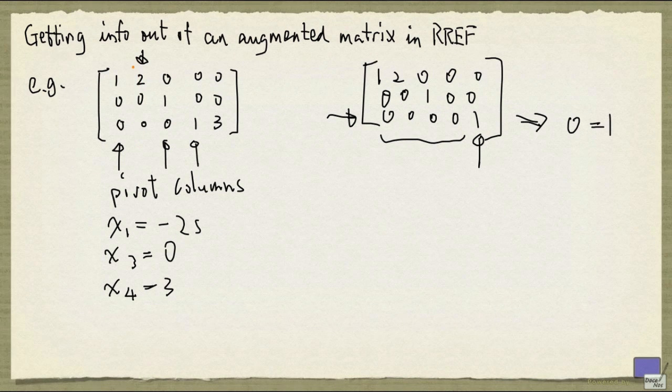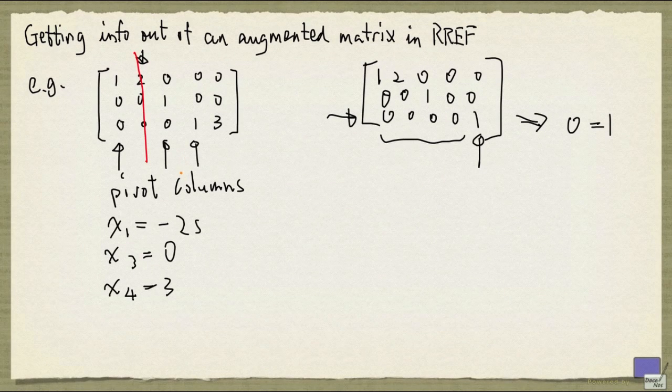Now, if there was no free variable, for example, if this was not there, then you'll get a unique solution, unless, of course, you have a row that looks like this over here, because all the pivot variables will have to be set to the right-hand side. So let me summarize what I've just said.